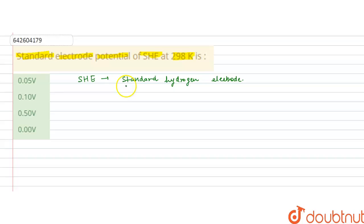The standard hydrogen electrode is a redox electrode that forms the basis of the thermodynamic scale of oxidation-reduction reactions. The standard hydrogen electrode potential is taken as the reference, and other electrode reactions are compared with it.